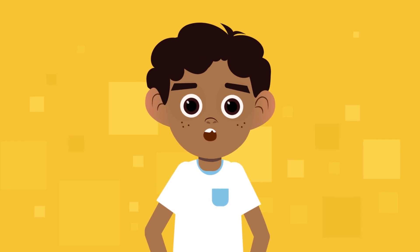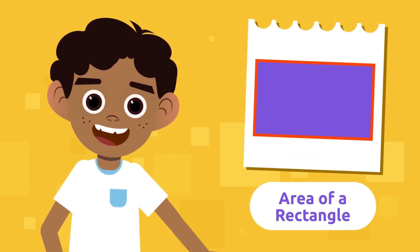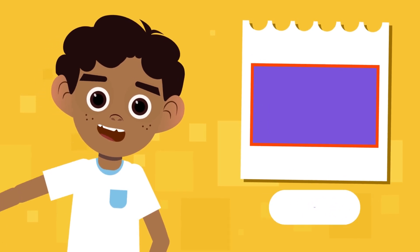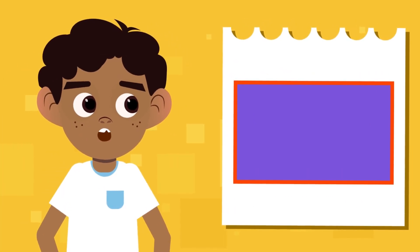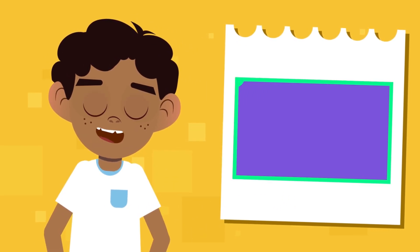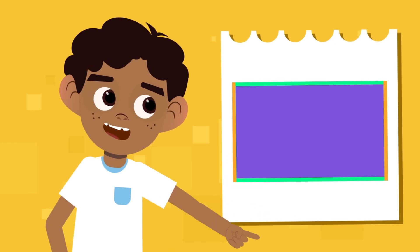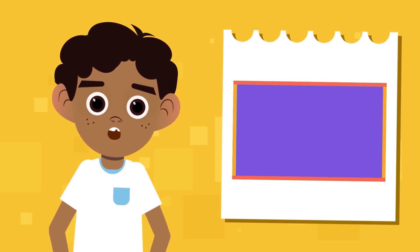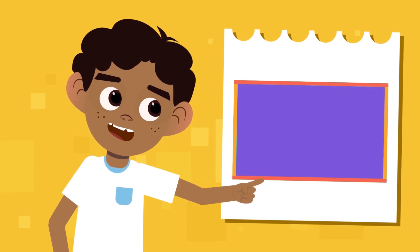Today we're going to teach you how to calculate the area of a rectangle, also called the surface area of a rectangle. Let's start by remembering what a rectangle is. A rectangle is a plane figure with four sides that make four right angles. It has two pairs of equal parallel sides — meaning its opposite sides are equal and parallel.